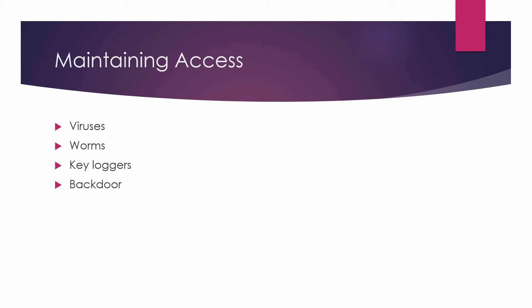Maintaining access. An attacker can drop a variety of viruses, worms, and keyloggers onto a computer to maintain access. Then the attacker will make sure that once they have access to the computer, they will keep their tracks clean so that they can access it again later in the future through a back door using a trojan. The attacker will continue to maintain access until the user finds out and wipes the malware.